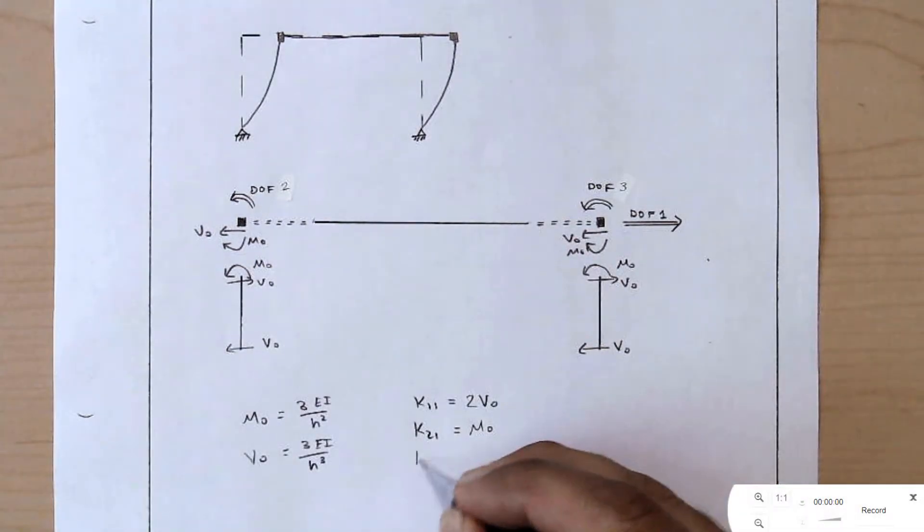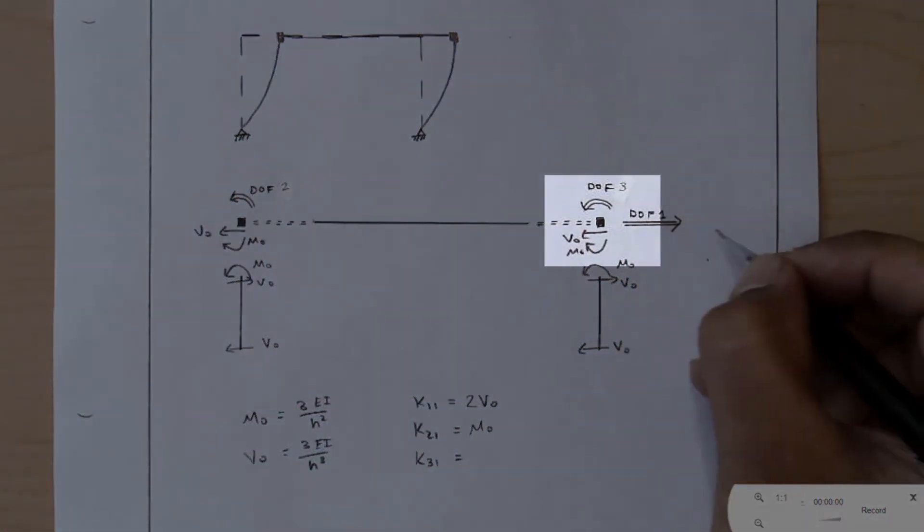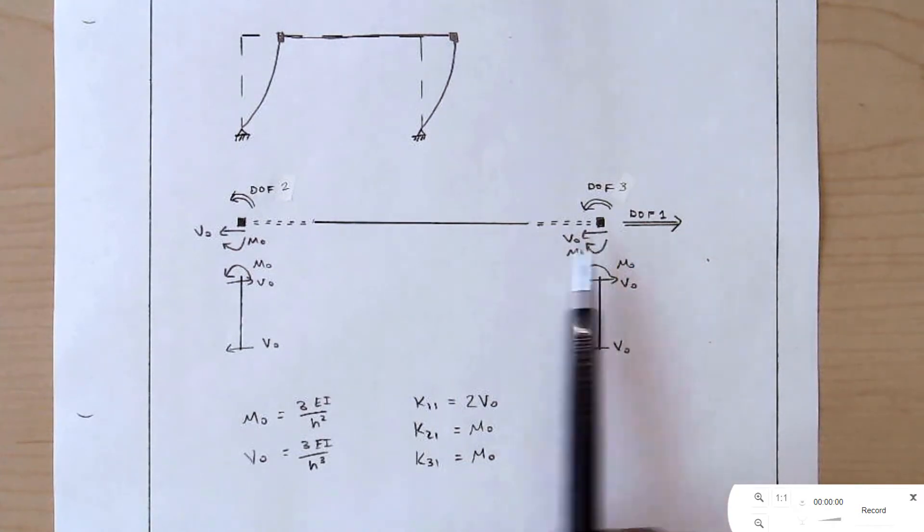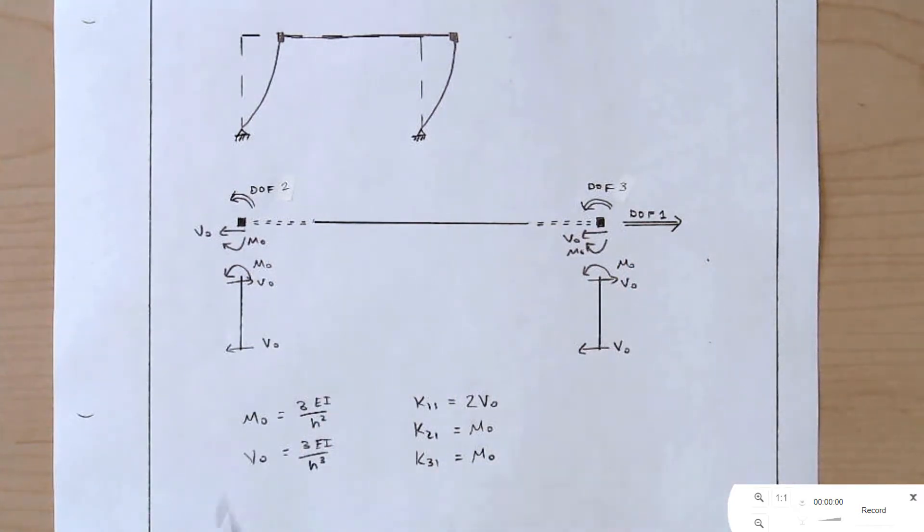K21 is the force on degree of freedom 2 due to this displacement at degree of freedom 1. Here's the M0 right here. K31 is the force on degree of freedom 3 due to this displacement on U1, M0. Let's just pay attention to the signs. The signs are positive if the force is opposite to the degree of freedom. So degree of freedom is rightward. These are leftward. Positive. The degree of freedom is counterclockwise. This is clockwise. Positive. Same argument here. So these are the stiffness values that we're looking for.